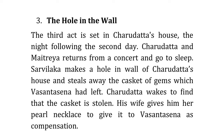Act 3: The Hole in the Wall. Charudatta and Maitreya return from a concert and go to sleep. After a while, Sharvilaka makes a hole in the wall of Charudatta's house and steals away the casket of jewels which Vasantsena had left. Charudatta wakes to find the casket stolen, and his wife gives him her pearl necklace to offer Vasantsena as compensation.